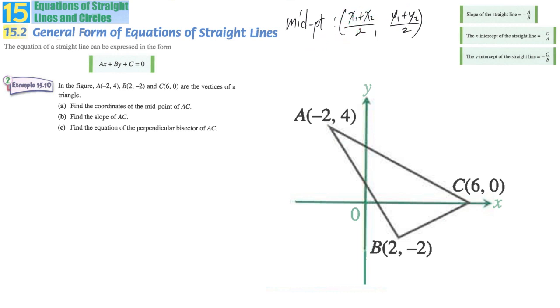This part is 6 while the X position of A is negative 2. We are finding what is the midpoint between negative 2 and 6. So negative 2 plus 6 divided by 2, we get the average. Then we get 2. Therefore, the midpoint X coordinate is 2.